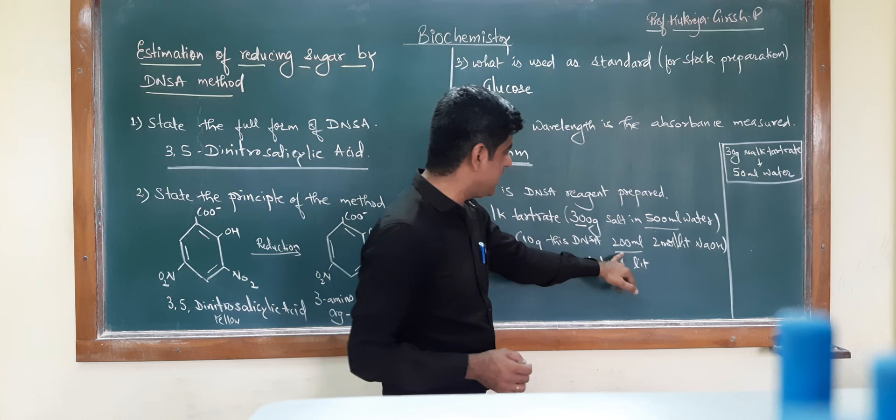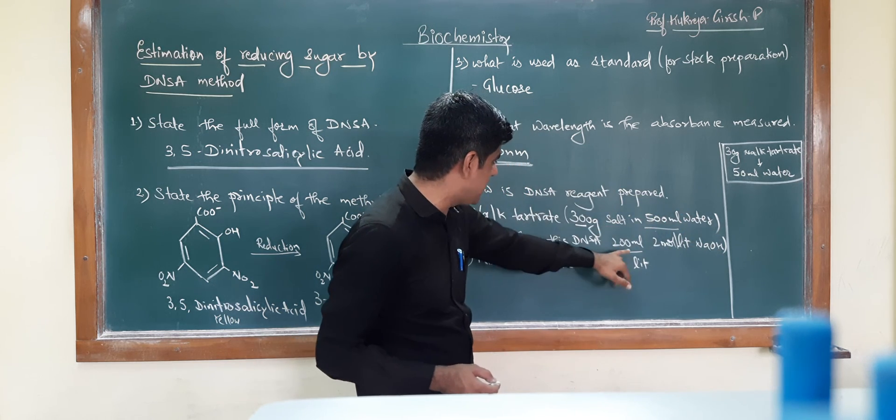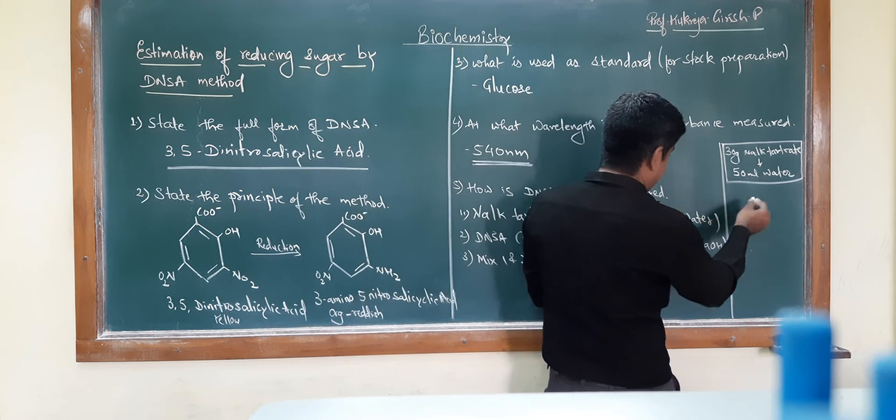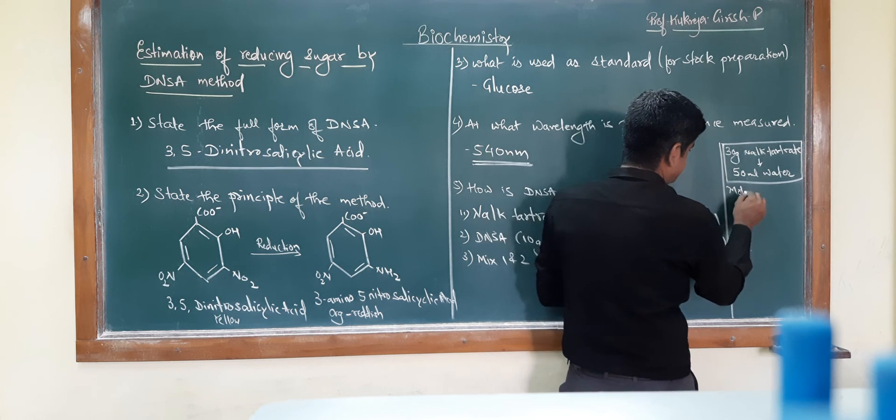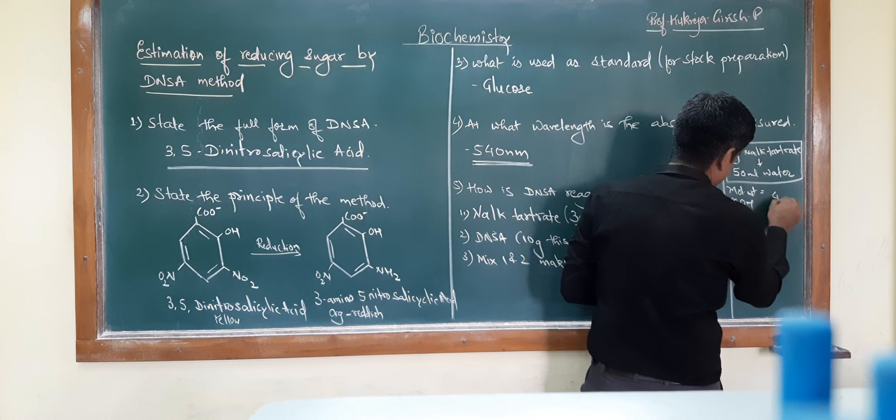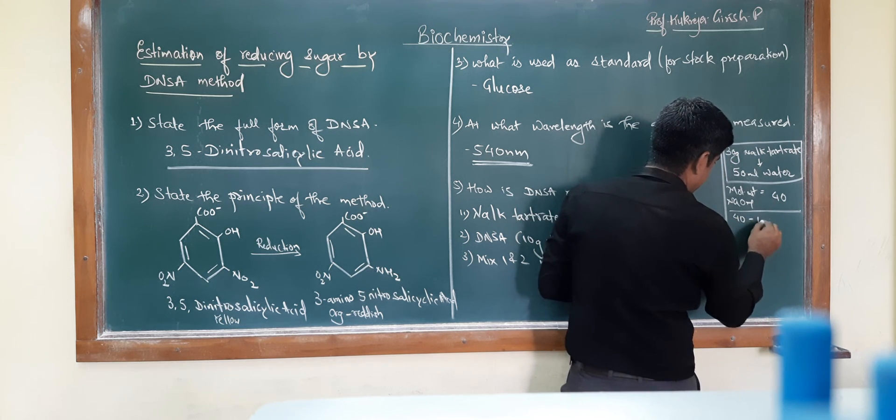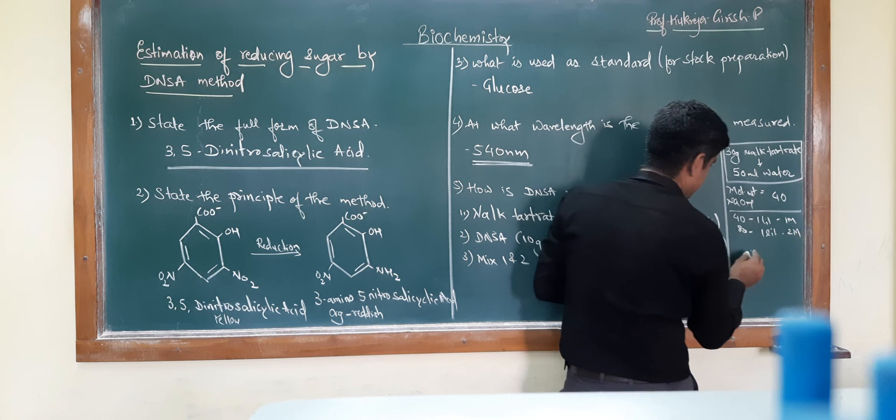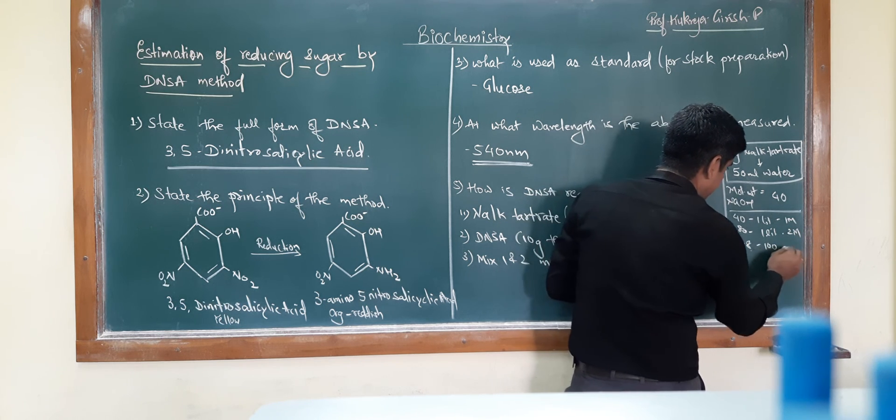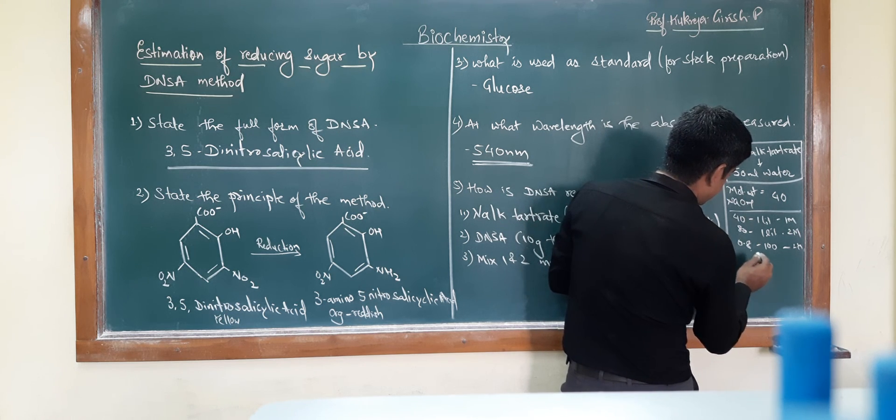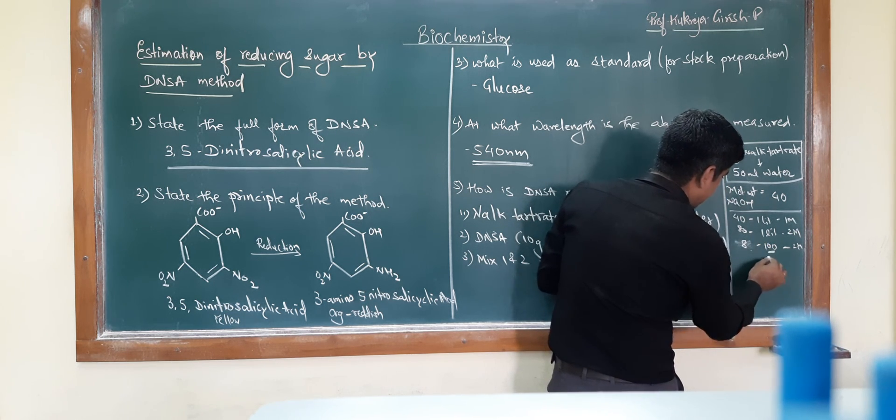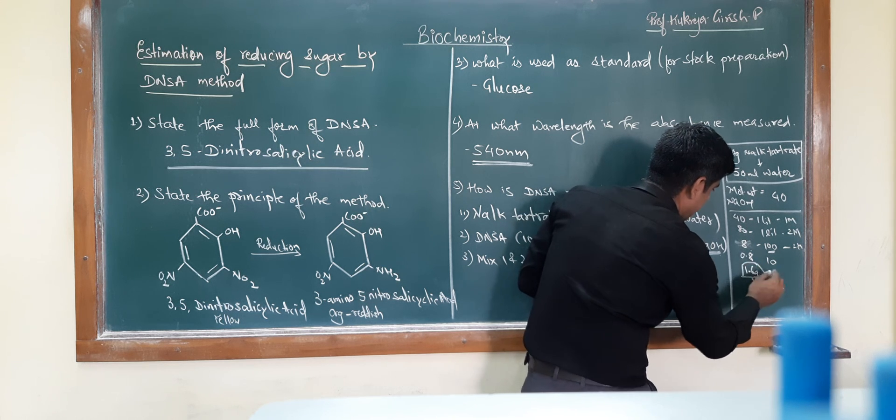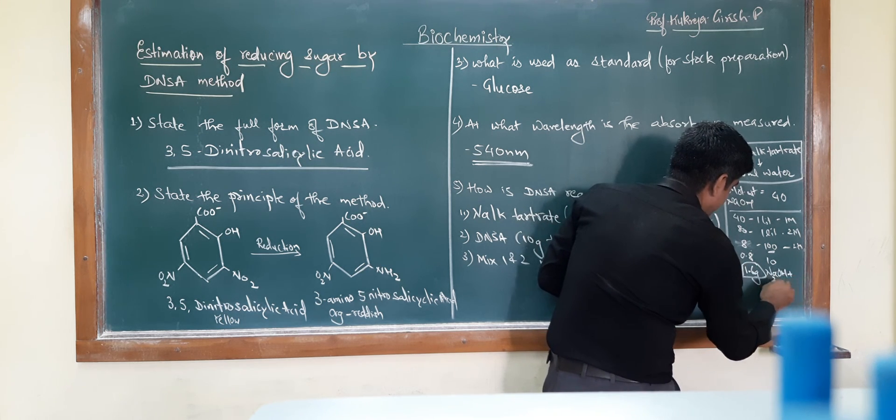Second, it says 10 grams of DNSA in 200 ml of 2 molar solution. To reduce 10 times, I will require 20 ml and instead of 10 grams, I will use 1 gram. For 2 molar NaOH, the molecular weight of NaOH is 40. If I dissolve 40 grams in 1 liter, this gives 1 molar. If I dissolve 80 grams in 1 liter, this gives 2 molar. For 100 ml, it will be 8 grams. For 20 ml, this will be 1.6 grams. So I will take 1.6 grams of NaOH and dissolve in 20 ml of water.